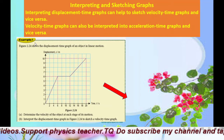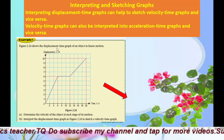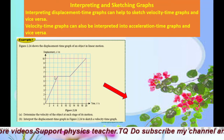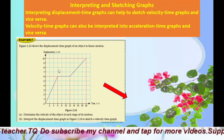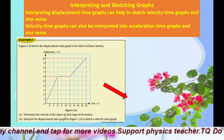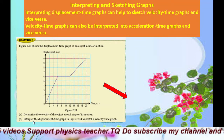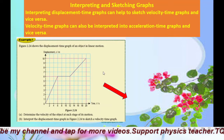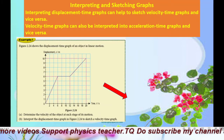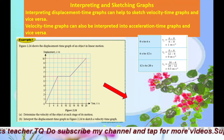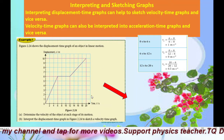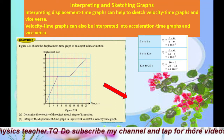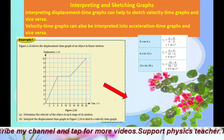Let's look at the first example. Figure 2.24 shows a displacement-time graph of an object in linear motion. There are three sections showing different types of motion. You must determine the velocity at each stage and interpret the graph to sketch a velocity-time graph. For an S-against-T graph, the gradient of the graph equals velocity, so you calculate the gradient for each section.